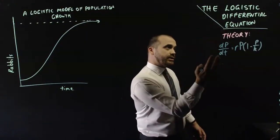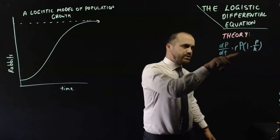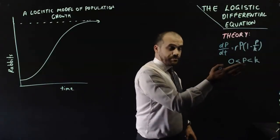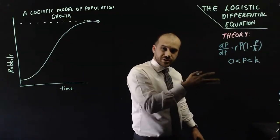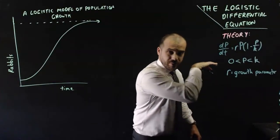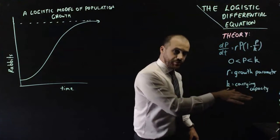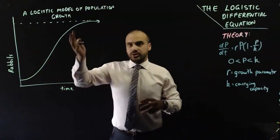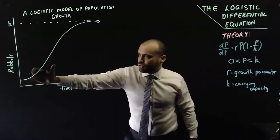Here is the logistic differential equation: the rate at which the population changes with respect to time equals R times P bracket 1 minus P over K. In this model, 0 is less than P, which is less than K. R is our growth parameter — it determines how fast growth takes place. K is our carrying capacity — how much the environment can sustain before we hit a limit. On our curve, K is the value where the graph levels out.